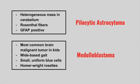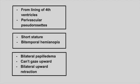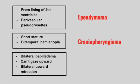The wide-based gait in medulloblastoma is due to cerebellar involvement. Next is a tumor that forms from the lining of the fourth ventricle and has perivascular pseudorosettes on biopsy. This is an ependymoma. Next is a patient with short stature and bitemporal hemianopsia. This is craniopharyngioma — compression of the pituitary gland leads to less growth hormone release causing short stature. Next is a patient with bilateral papilledema who cannot gaze upward and has bilateral upgaze retraction. This is a pinealoma.